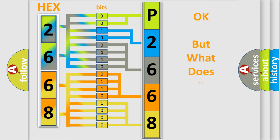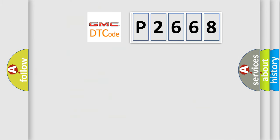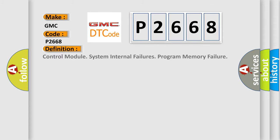We now know how the diagnostic tool translates received information into a more comprehensible format. The number itself does not make sense if we cannot assign meaning to what it actually expresses. So, what does the diagnostic trouble code P2668 interpret specifically for GMC car manufacturers? The basic definition is: control module system internal failures — program memory failure.